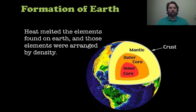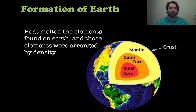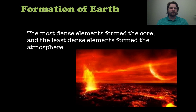What happened in the early Earth is that heat melted the elements on Earth, and they got arranged by density. So you have the crust, the mantle, the outer core, and the inner core, made up of different elements based upon density. The most dense elements are found in the core, and the least dense ones form the atmosphere.